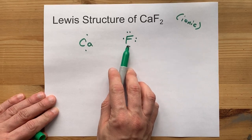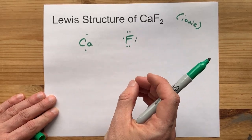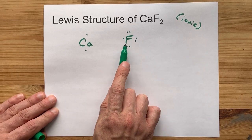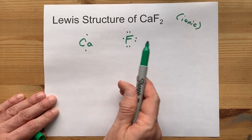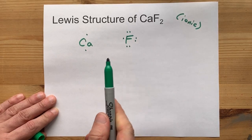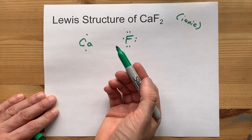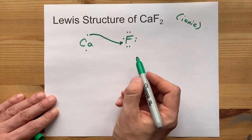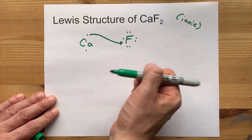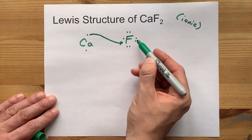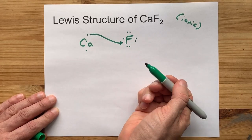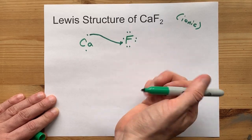Now, non-metals want a complete octet, or eight electrons in its outer shell. You currently have seven, which means you only need one more to complete the octet. Calcium is a metal and will easily give its electron away to a non-metal that needs that electron. Now, this fluorine has eight electrons. It took this one from calcium and is stable and happy.